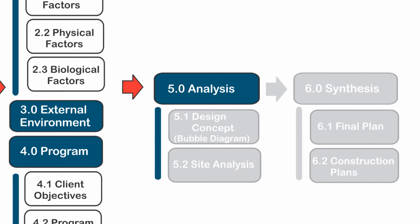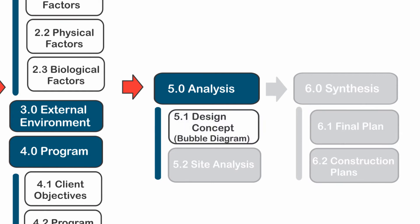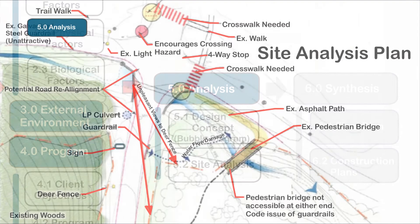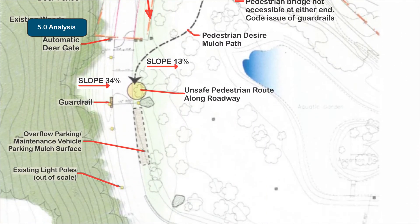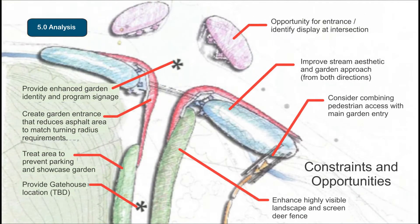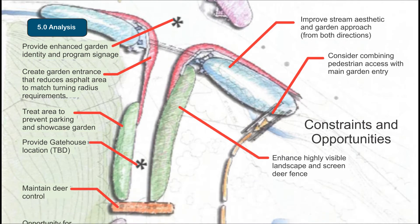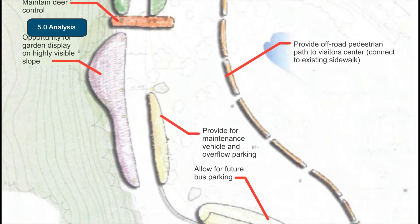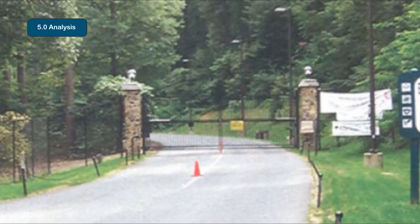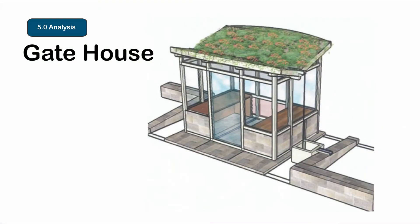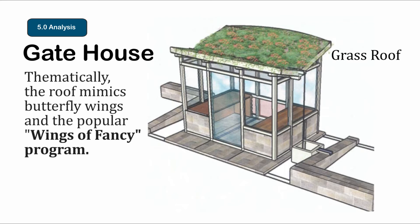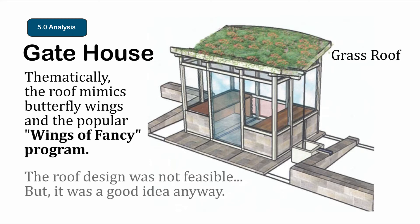The analysis phase begins to make conclusions about these relationships and how they will affect the final design. It is subdivided into two subgroups. Design concepts focuses on the relationship between major elements, and often bubble diagrams are used. Site analysis focuses on constraints and problems and opportunities identified within the site. For Brookside Gardens, the analysis phase provides the opportunity to correct several design flaws with the entrance and to integrate the thematic transition into the gardens, emphasizing its popular program, Wings of Fancy.